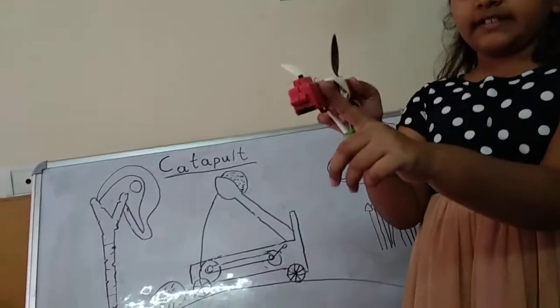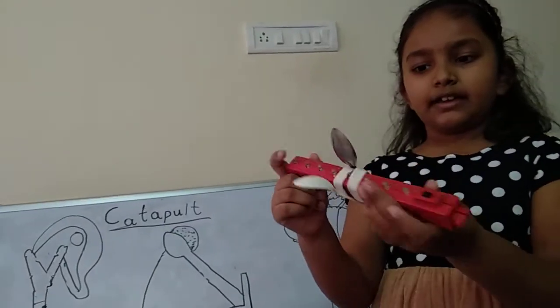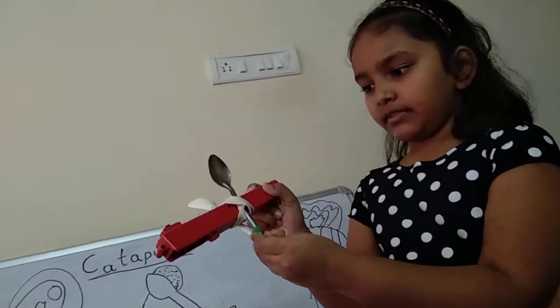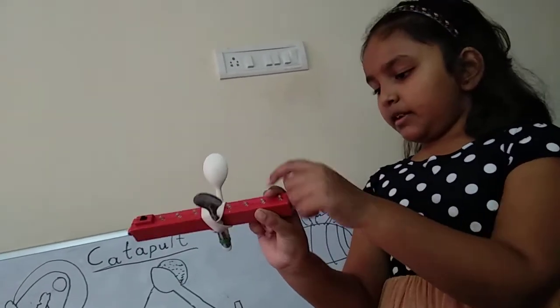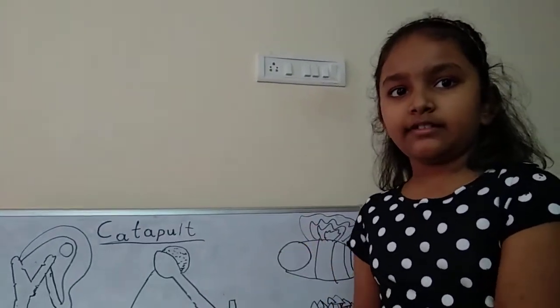You can use something else for the base here, but we use a light bulb. And you can use something else for these parts, but we use two spoons. And put something here to hold it together nicely.